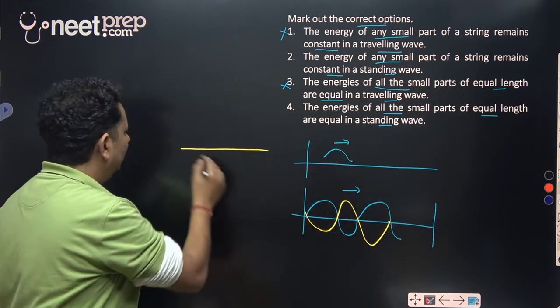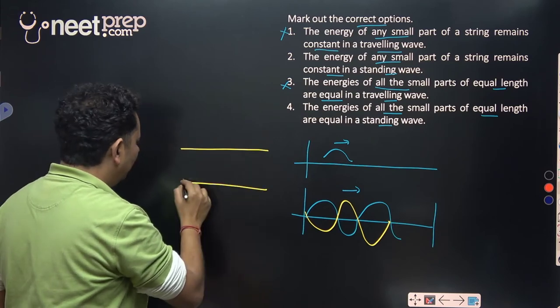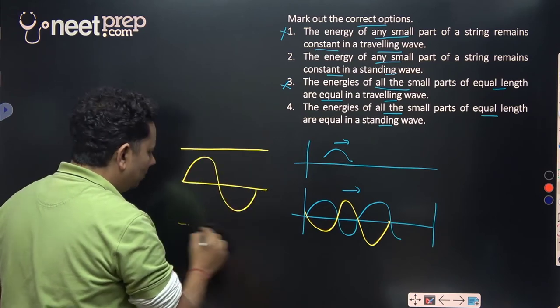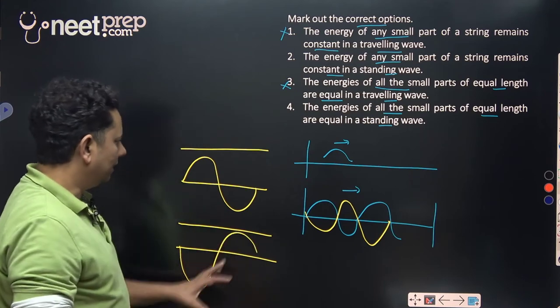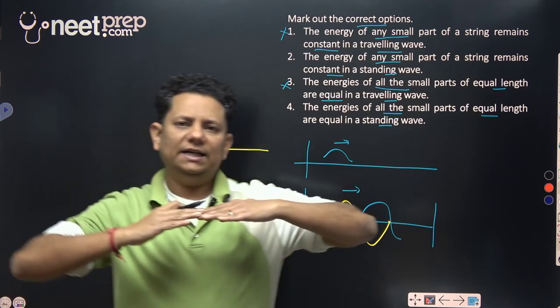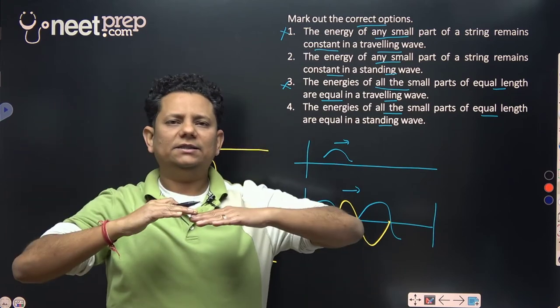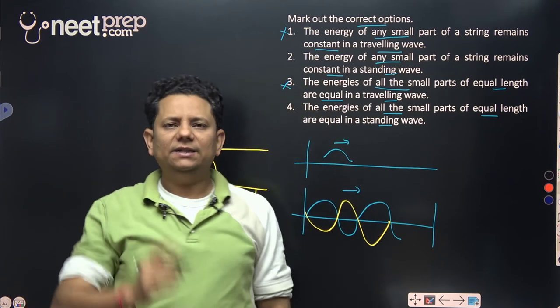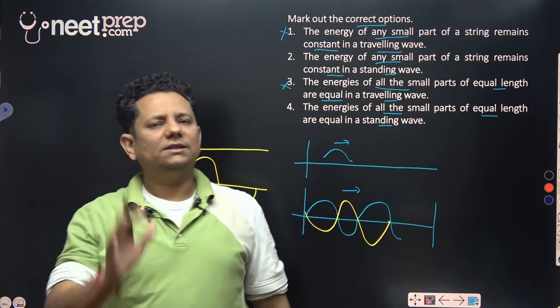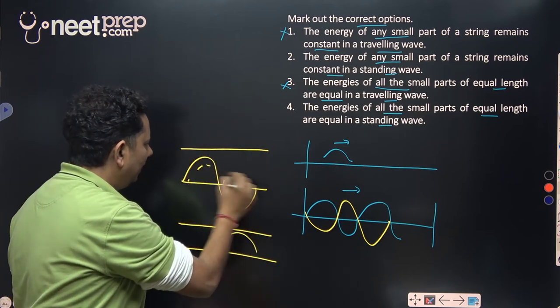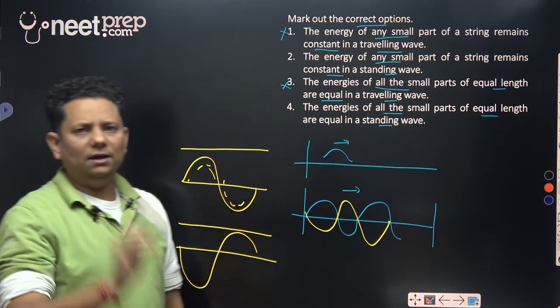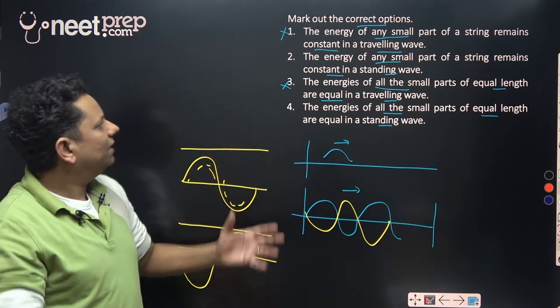Then the wave comes back in a different shape. So at any instance in a standing wave, the string can be like this, or with double amplitude like this, or like this, or with double amplitude in this position, or at any instance the string can be in different locations between these positions.